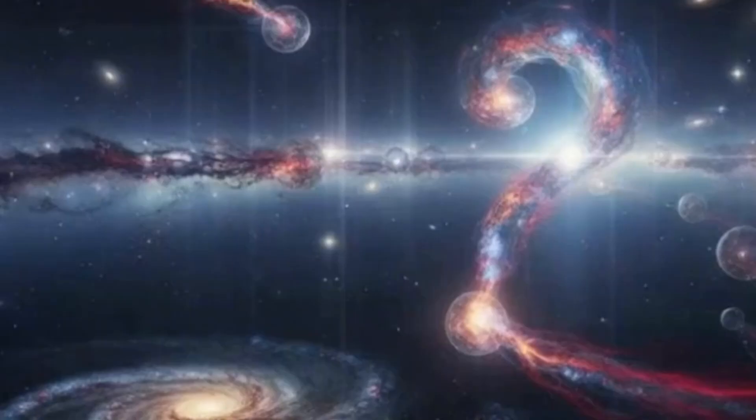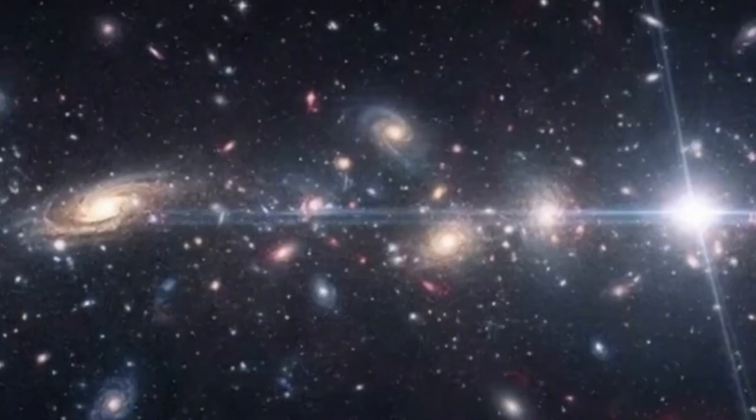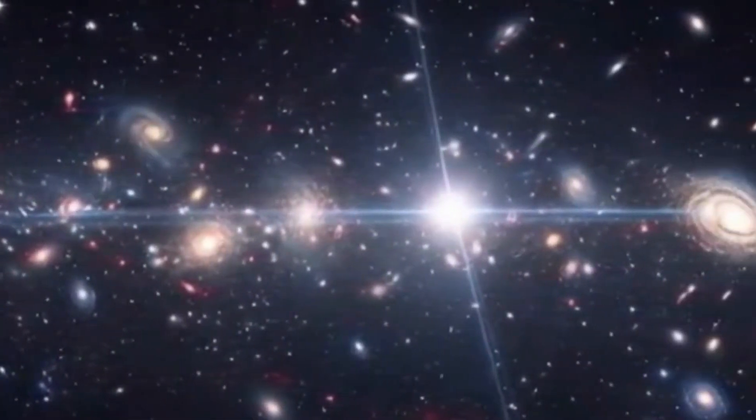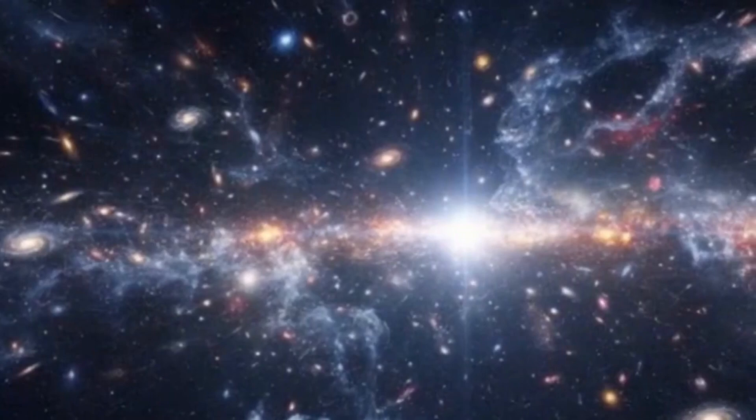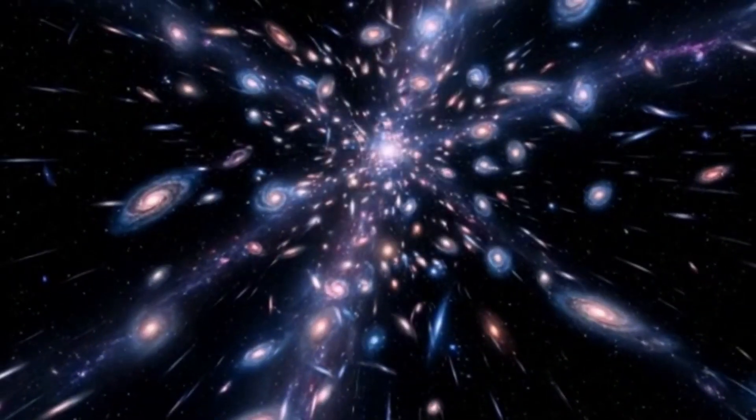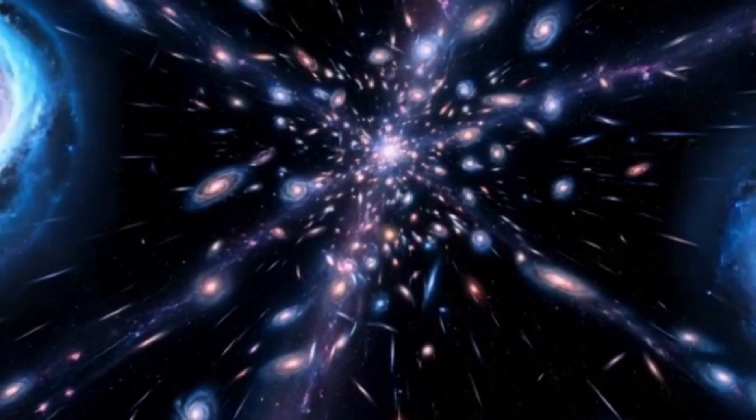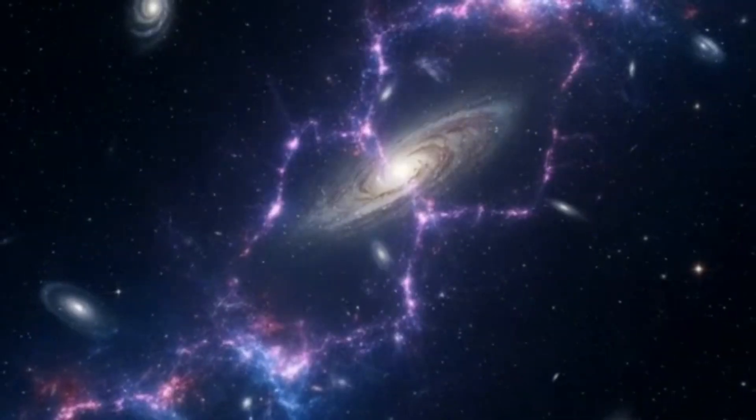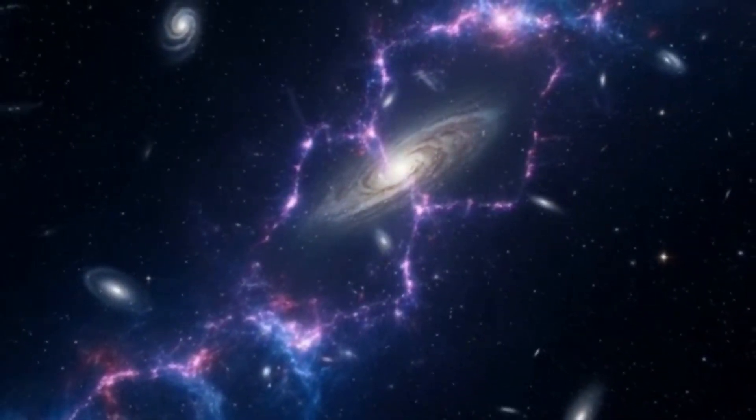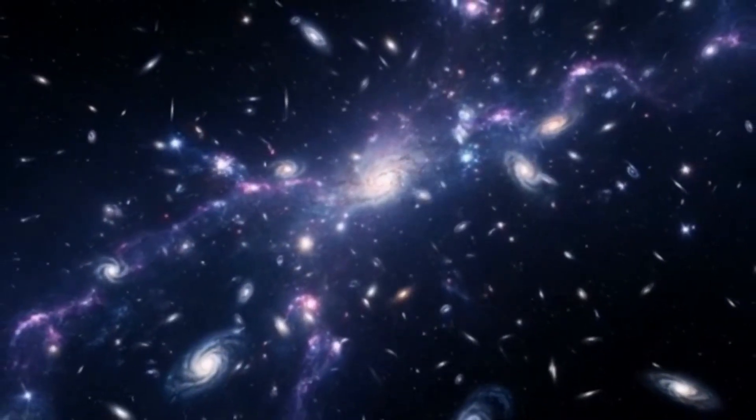Now, a newer idea called the cyclic quantum universe takes this concept even further. According to this theory, the universe doesn't just begin once. It expands, contracts, and then bounces back again, endlessly. And during each of these cosmic bounces, the remnants of the old universe don't disappear. They leave behind subtle traces called information wells that may give rise to primordial black holes, tiny yet unimaginably dense objects that appeared almost at the dawn of time. If these ancient black holes truly exist, they could be the fossils of a universe that lived long before ours.